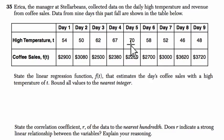I'm guessing we're selling hot coffee, but it doesn't really matter here. They want to know what the linear regression is at the nearest integer. They want to know what the correlation coefficient is here and what that means.